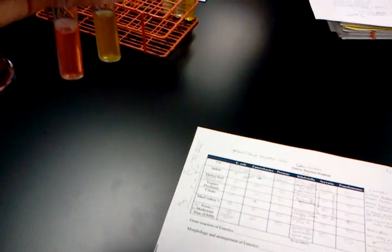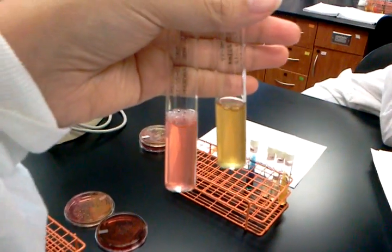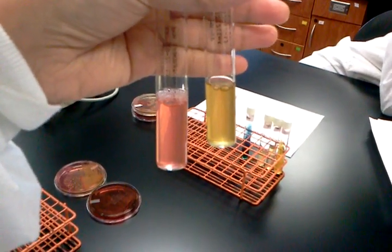This is the Vogues-Proskauer tube. The methyl red also used Vogues-Proskauer sugars but this one is the actual test and we used two reagents, Vogues-Proskauer 1 or A and Vogues-Proskauer 2 or B. Vogues-Proskauer 1 has alpha naphthol and 2 has potassium hydroxide. Positive is pink color, negative stays yellowish.